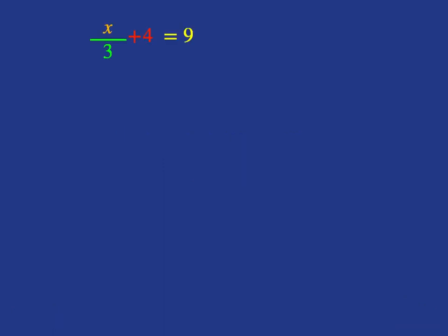Let's have a look at something like this. Here we have an equation that says x over 3 plus 4 is equal to 9. What does this mean?